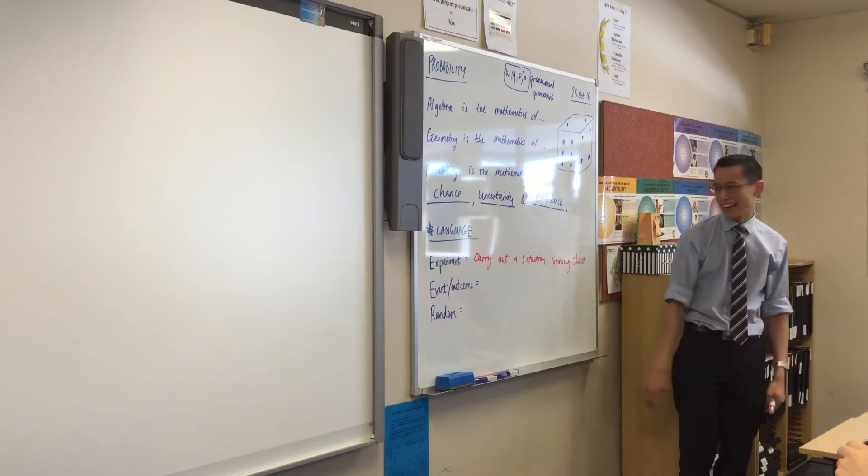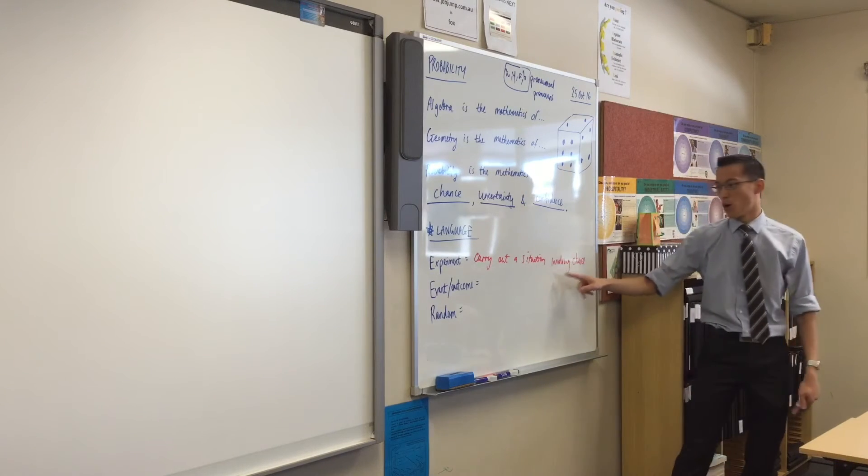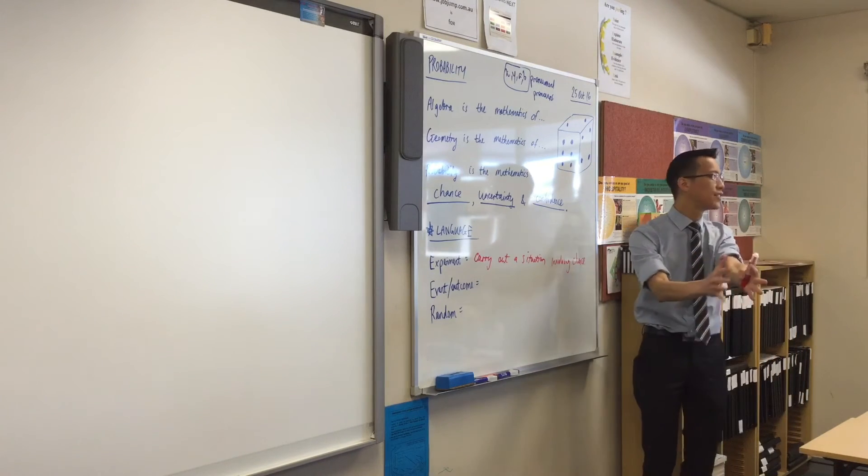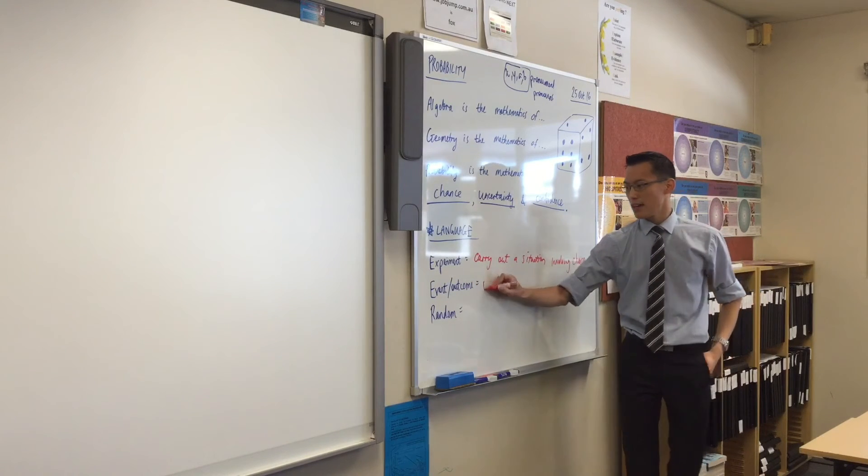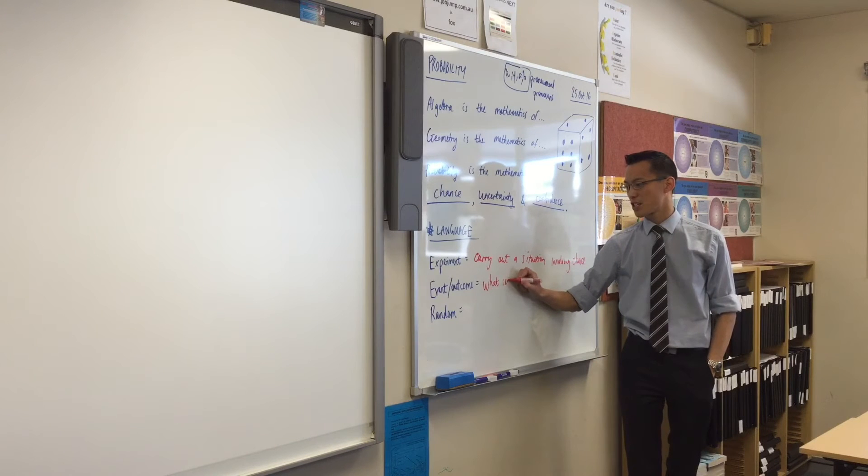That would be an experiment, okay? It's a situation that involves chance. You're like, okay, well, let's give it a go. Okay? Now, an event or an outcome is what results after an experiment.